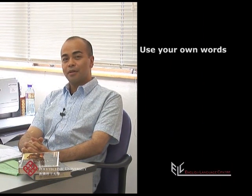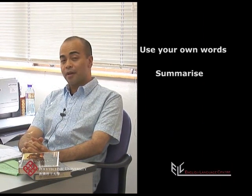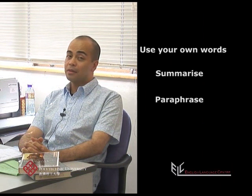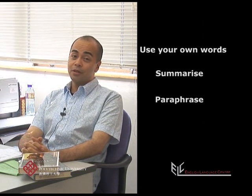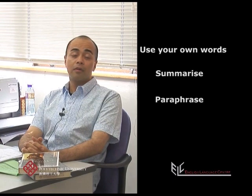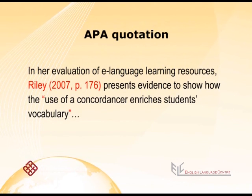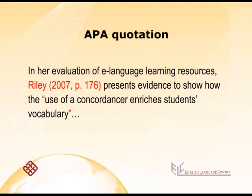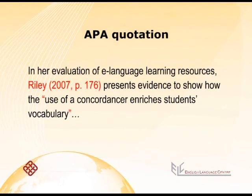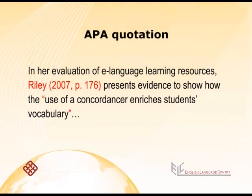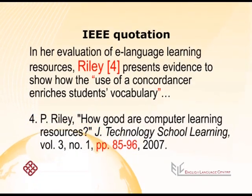Remember, when you reference, you should use your own words — you should summarize or paraphrase the original source. If you don't do that, you are copying. In which case, you should quote and use double quotation marks. Here's an example of a quote in APA style with double quotation marks. Note that you also need to give the page number for a direct quotation. For a quote in IEEE or Vancouver style, the page number should be put in the reference list. You still need the quotation marks — see this example.